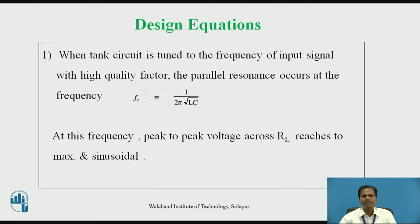Let us discuss the design equations for the Class C power amplifier. When the tank circuit is tuned to the frequency of the input signal with a high quality factor, the parallel resonance occurs at frequency FR = 1 / (2π√LC). The resonant frequency of the parallel tank circuit depends upon the values of the inductor and capacitor. At this frequency, the peak-to-peak voltage across load resistor RL reaches its maximum value and the amplified output signal is obtained.